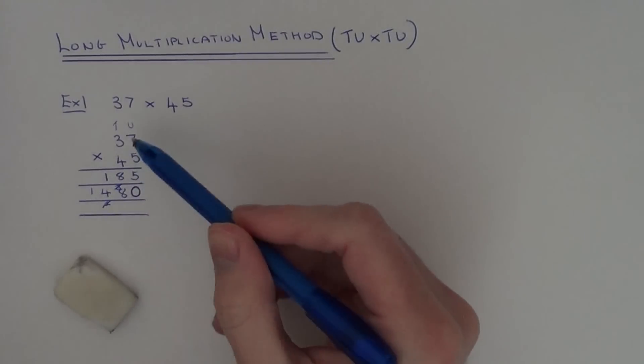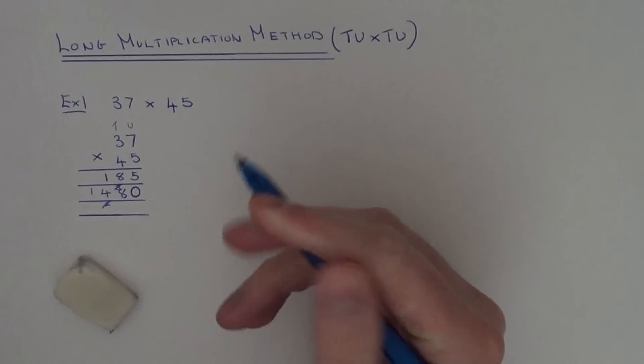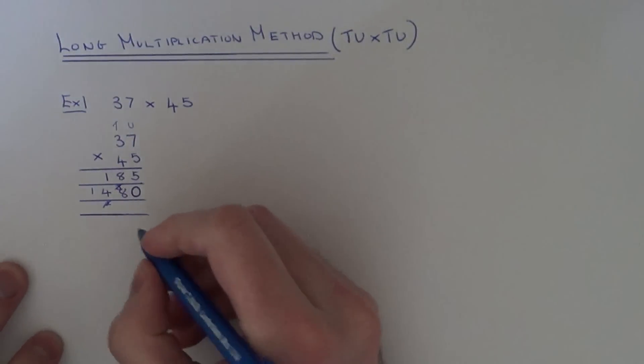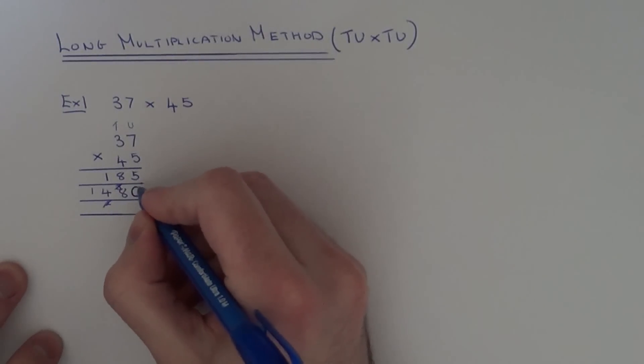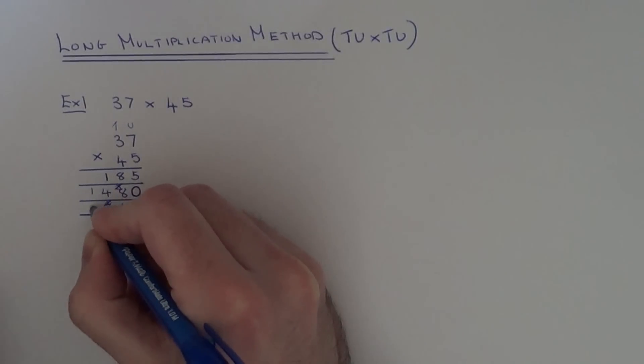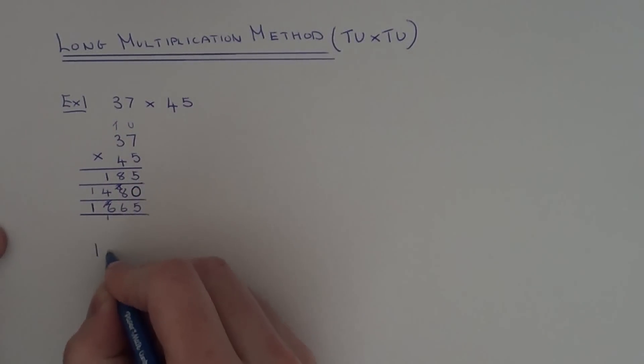So what we've done then is 37 times 5, and then we've also done 37 times 40 on the next line. So once we've got these two answers, we just need to add these two lines up. So 5 add 0 is 5, 8 add 8 is 16, 4 add 1 add 1 is 6, and the final column we've just got a 1. So our final answer is 1665.